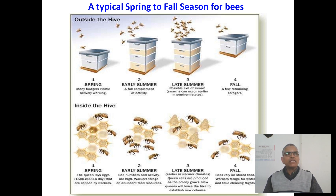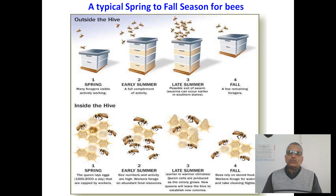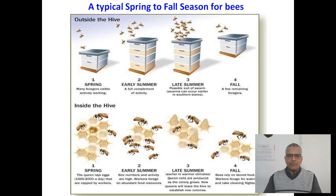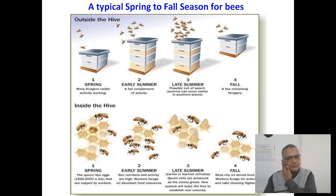Outside the hive: during spring many foragers are visible actively working, and this continues in early summer. During late summer a swarm can occur earlier in that season, and during fall you can see only a few foragers. Inside the hive: during spring the queen lays a lot of eggs, taken care of by the workers. During early summer the number of eggs laid by the queen is very high. During late summer, queen cells are produced as the colony grows, and new queens will leave the hive to establish new colonies. Bees rely on stored food during the fall season.